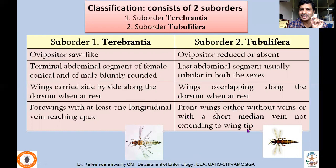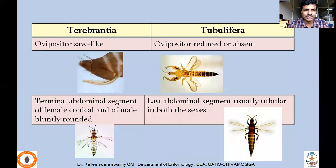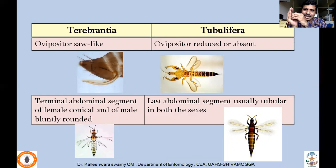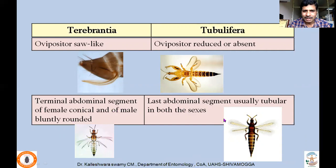The saw-like ovipositor in Terebrantia allows piercing into plant parts and laying eggs inside leaf tissues. In Tubulifera, since the ovipositor is reduced or absent, the feeding activity itself results in formation of cracks and crevices due to leaf folding, and eggs are deposited in those crevices — not inserted into plant tissues as in Terebrantia. The terminal abdominal segment of the female in Terebrantia is conical and of the male is bluntly rounded, whereas in Tubulifera the last abdominal segment is tubular in both sexes.